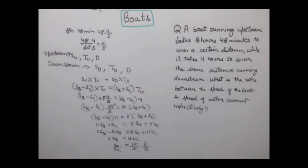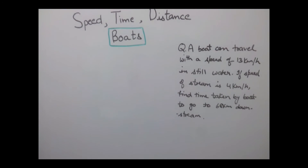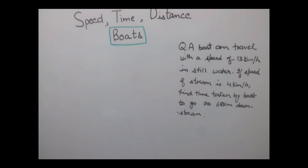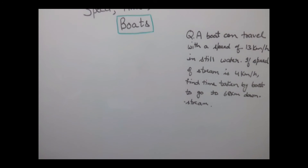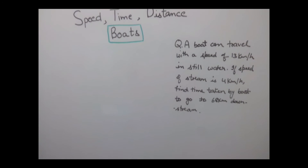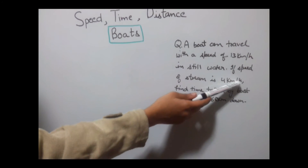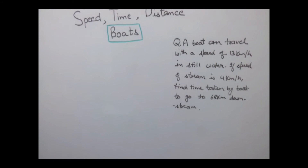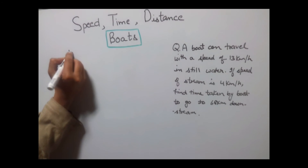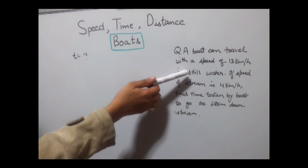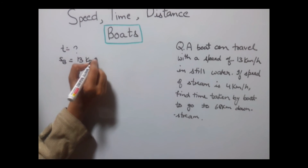Let's solve one more example. A boat can travel with a speed of 13 km per hour in still water. If the speed of the stream is 4 km per hour, find the time taken by the boat to go 68 km downstream. Check the units — speed is 13 km/h, stream is 4 km/h, and distance is in km, so no unit conversion is needed. We need to find time T; speed of boat SB equals 13 km per hour.